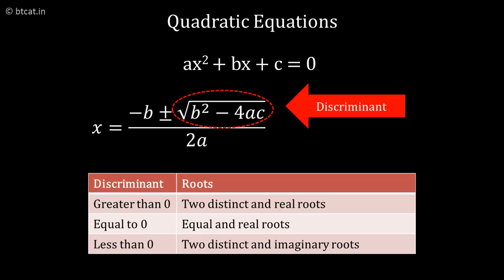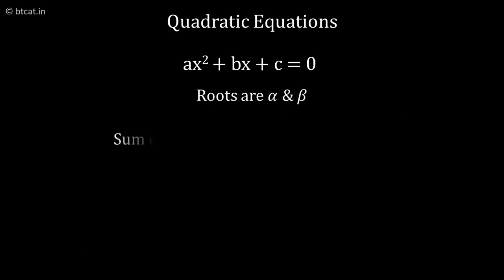The sum of the quadratic equation roots α + β is given by -b/a, where a, b, c are the coefficients of x², x, and the constant term. The product of roots is given as αβ = c/a. All these formulas are very handy and you must remember them.